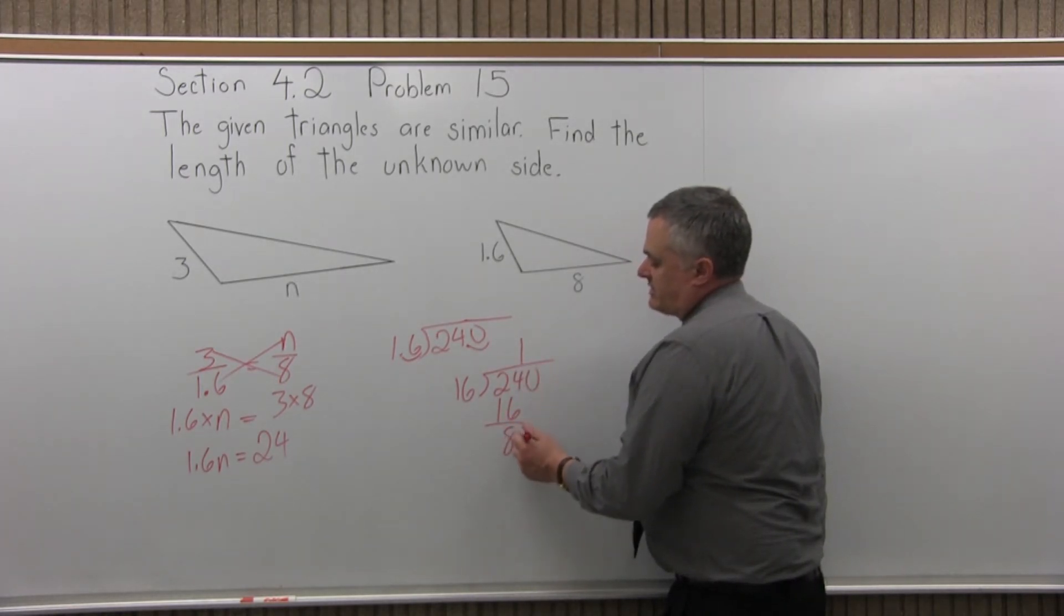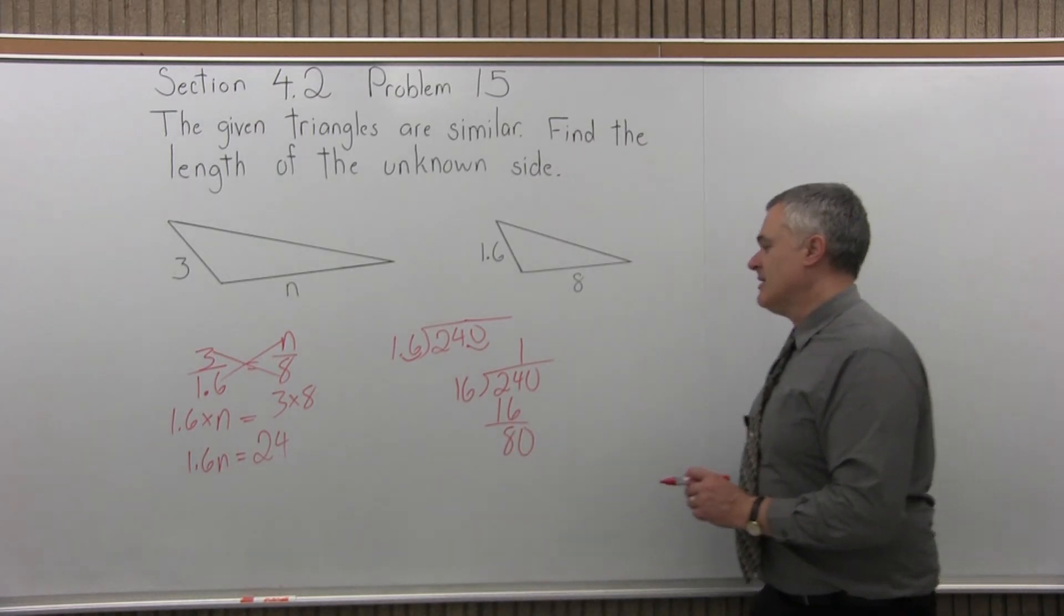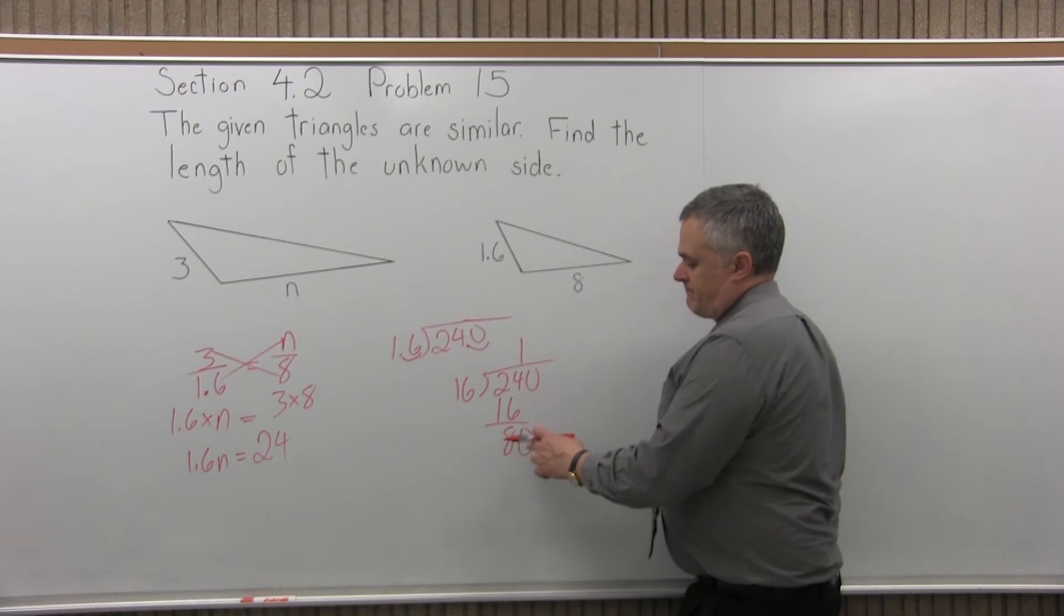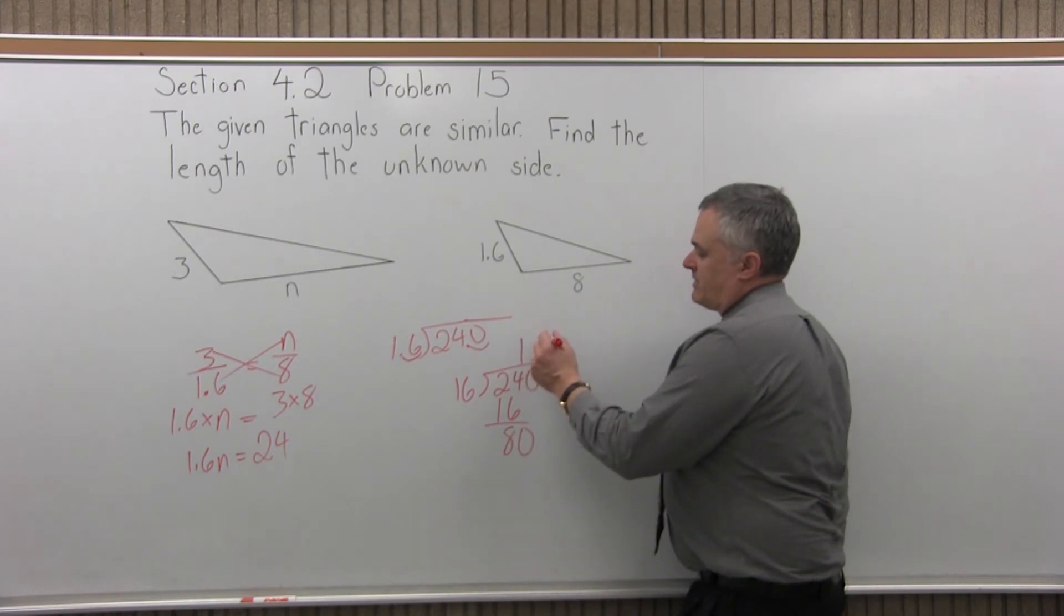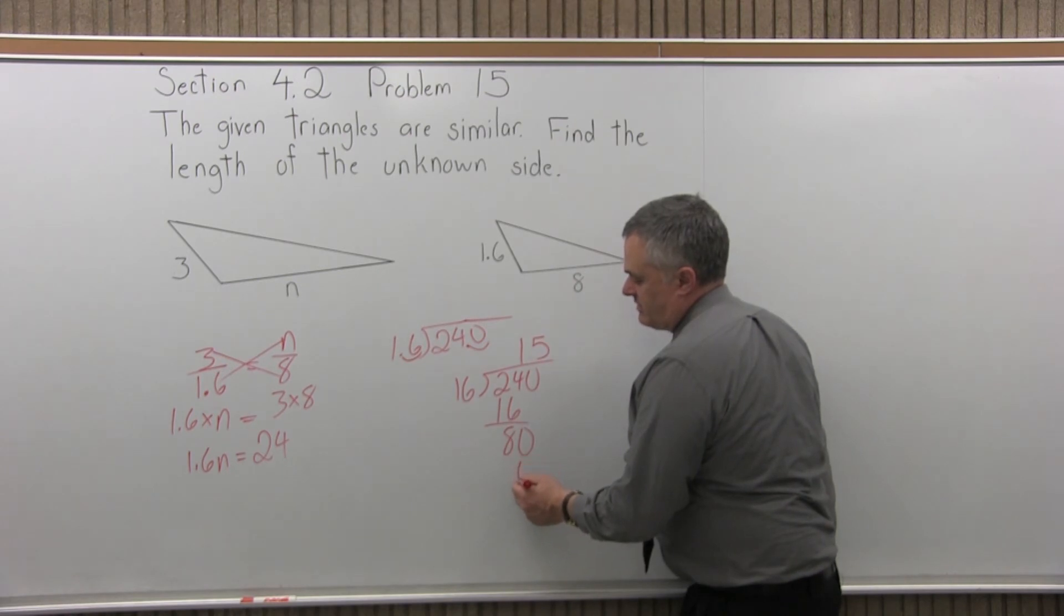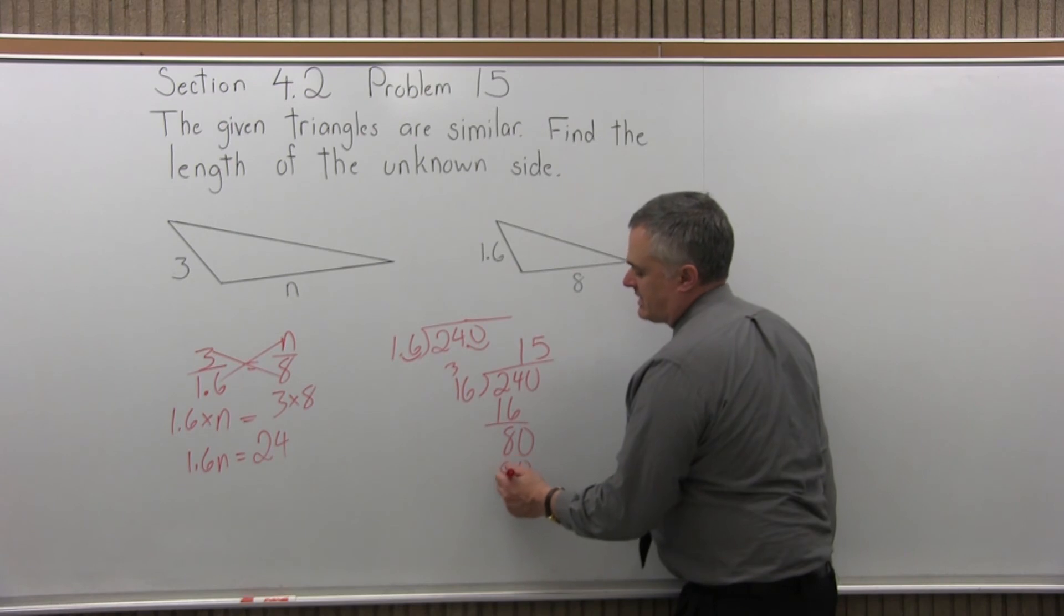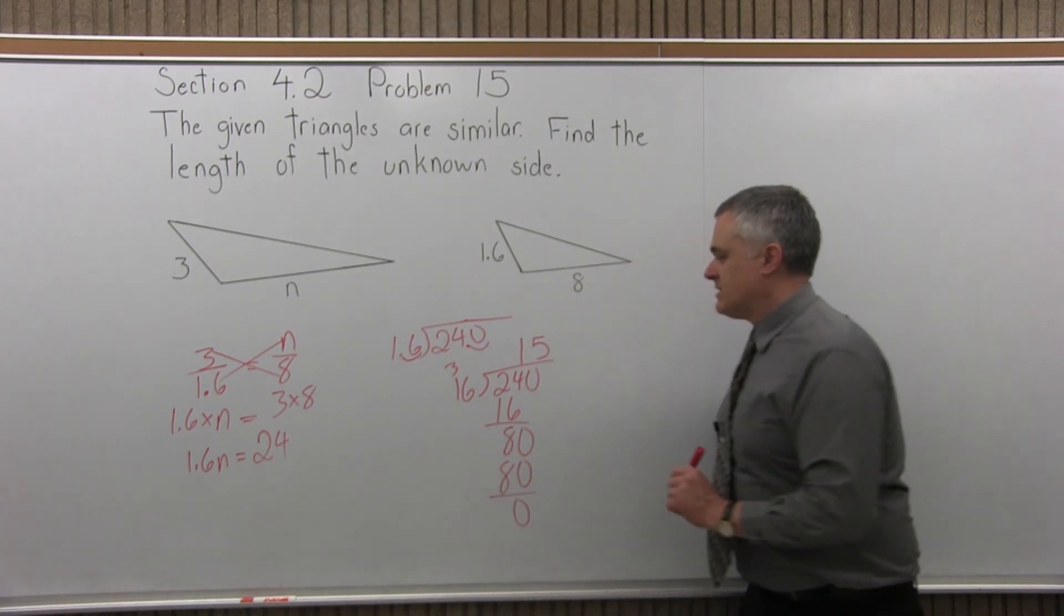Bring down the next digit which is a 0. Now 16 divides into 80. 5 should make it fit. Let's try it. 5 times 6 is 30. Write the 0 carry the 3. 5 times 1 is 5. 5 plus 3 more is 8 and it does fit exactly. 80 minus 80 gives you a remainder of 0.